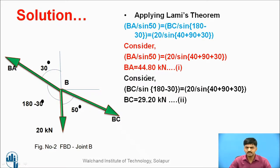Similarly, you equate BC sin (180-30) to 20 sin (40+90+30). You calculate the value of BC. It comes 29.20 kilonewton. BA and BC are calculated by considering Lami's theorem.